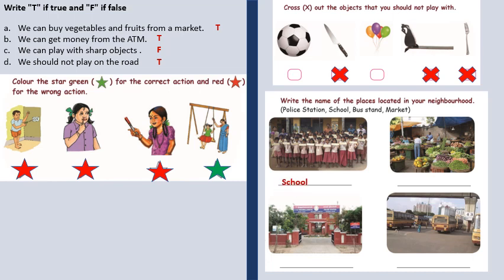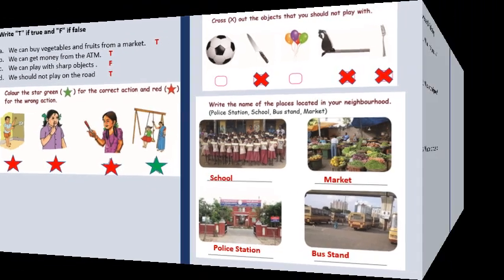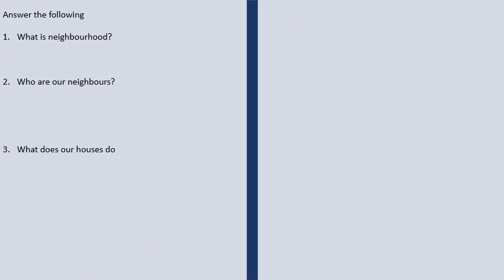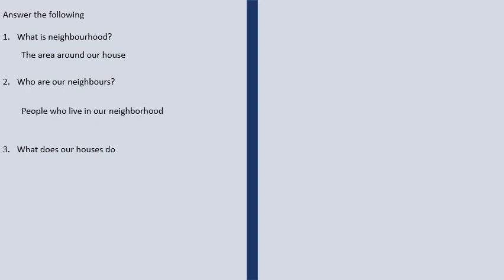Write the name of the places located in a neighborhood. The first is school, the next one is a marketplace, the third one is a police station, and the last one is a bus stand. Answer the following questions. What is a neighborhood? The area around our house. Who are our neighbors? People who live in our neighborhood. What do our houses do? They protect us from heat, cold, rain, and wild animals.